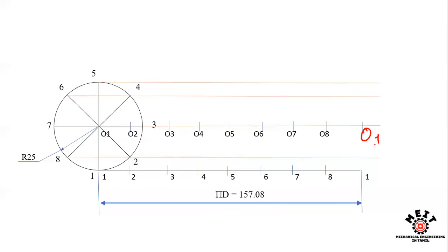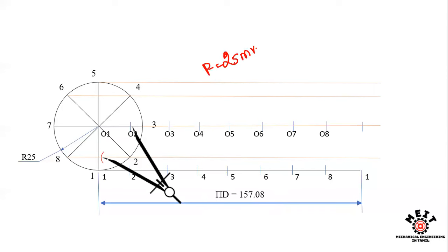The next step is to draw arcs. Keep your compass set to the radius of 25mm. Place the compass needle at center 1 on the locus of centers line and draw an arc. This arc, intersecting the horizontal line from point 1, gives you the first point on the cycloid curve.